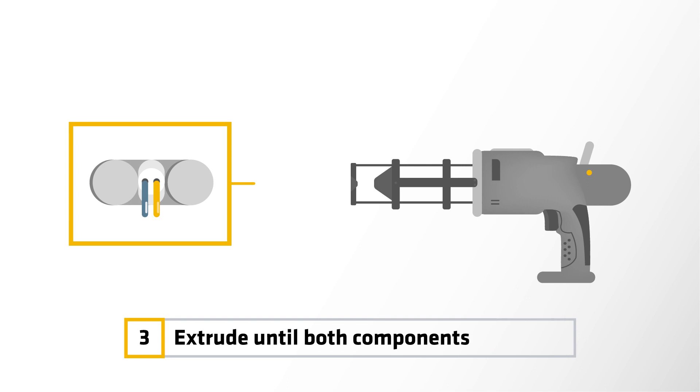Next, extrude until both components are fully dispensed to prevent air entrapment and ensure that the components are evenly leveled.